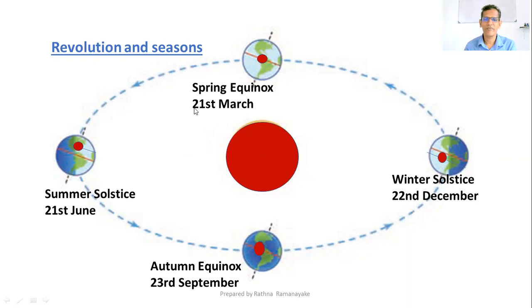On March 21st, the Sun is overhead over the equator. In the Northern Hemisphere, it is Spring. In the Southern Hemisphere, it is Autumn.